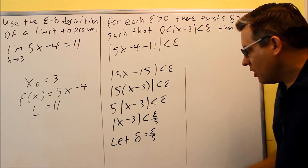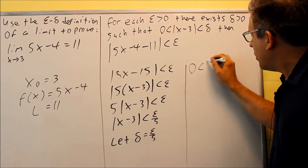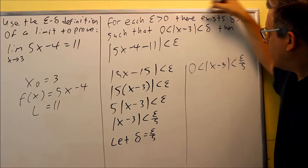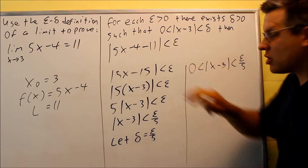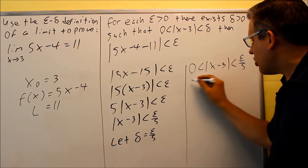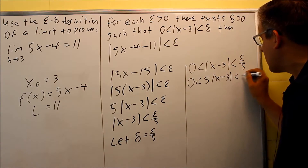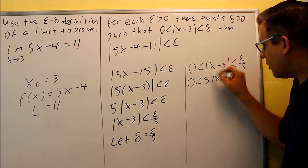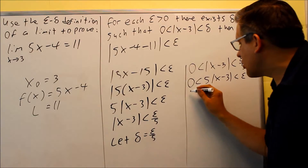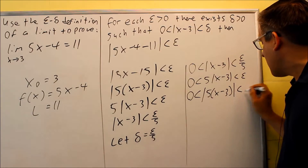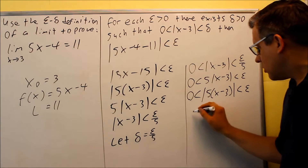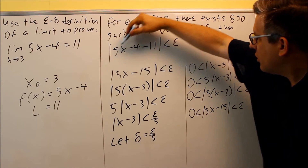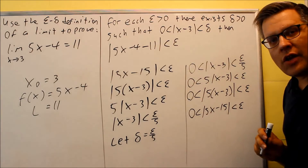Here's how we do the second direction. We let delta equal epsilon over 5 and start with 0 less than the absolute value of x minus 3 less than epsilon over 5. Multiplying both sides by 5 gives 5 times the absolute value of x minus 3 less than epsilon. Then we put the 5 back inside the absolute value to get the absolute value of 5(x minus 3), which multiplies out to 5x minus 15, less than epsilon.